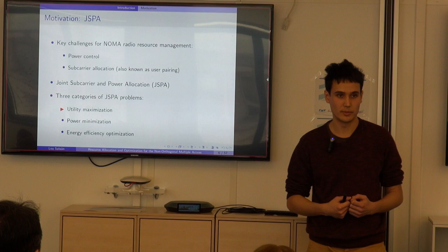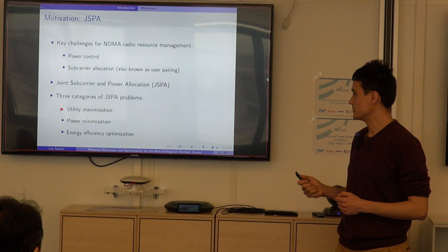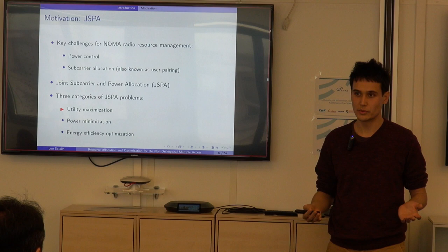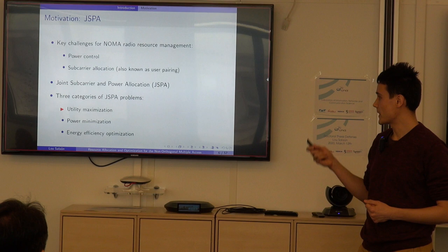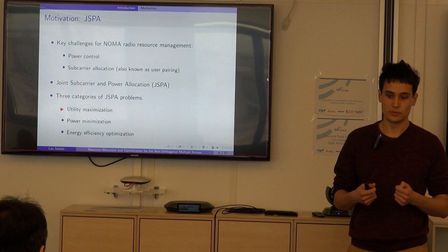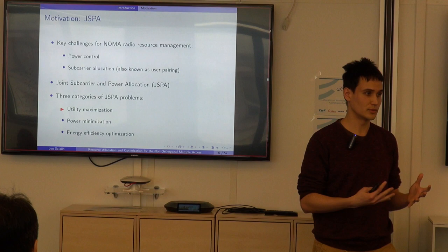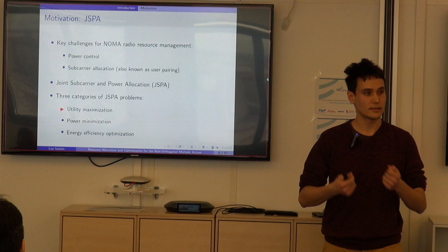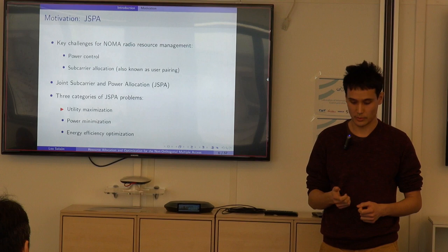There are three categories of JSPA problems. First, utility maximization, which consists in maximizing a utility function of the system's data rate, such as total system throughput or proportional fair allocation. Second, power minimization, which minimizes power consumption given minimal quality-of-service constraints for each user. Finally, energy efficiency optimization combines the above two by maximizing the ratio between the system's data rate and power consumption. In this thesis, we only consider the first category.